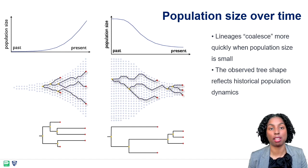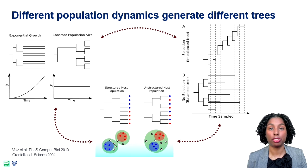As mentioned earlier, different trees give us insight into different population dynamics. The top left tree, where there is rapid bifurcation, sheds light into an exponential growth of the pathogen's effective population size. In the adjacent tree, we see that branching events occur not as rapidly, which is an indication of a constant population size.